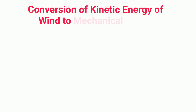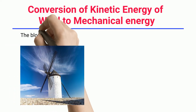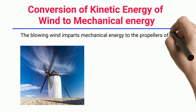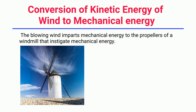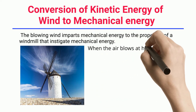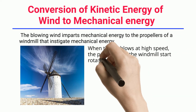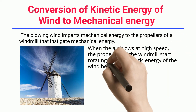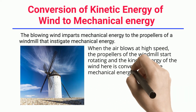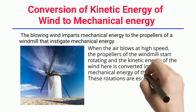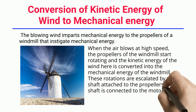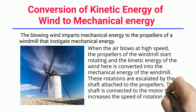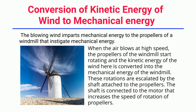Conversion of kinetic energy of wind to mechanical energy: The blowing wind imparts mechanical energy to the propellers of a windmill that instigate mechanical energy. When the air blows at high speed, the propellers of the windmill start rotating and the kinetic energy of the wind is converted into the mechanical energy of the windmill. These rotations are escalated by the shaft attached to the propellers, which is connected to the motor that increases the speed of rotation.